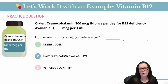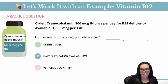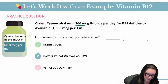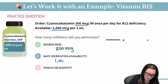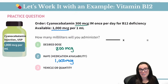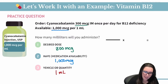Now let's take a closer look at our final practice question. The order states that we need to give cyanocobalamin 300 micrograms IM once per day for B12 deficiency. It's available in 1,000 micrograms per 1 mL. So what is our desired dose? We know that we want to give 300 micrograms. What do we have available? We have 1,000 micrograms available because that's what's written on our bottle. And what's the vehicle or the quantity? We know that it is available per every mL.